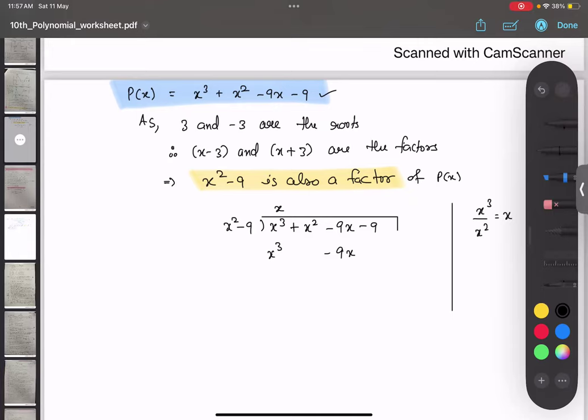Please write each term below the appropriate number - x³ below x³, x below x. Now change the sign, we are doing subtraction. So this is getting cancelled and this is also getting cancelled.